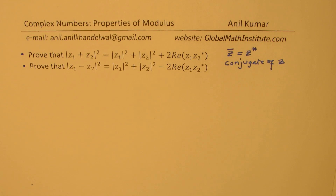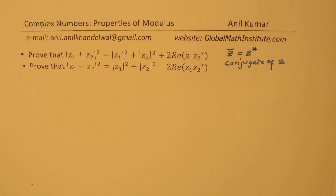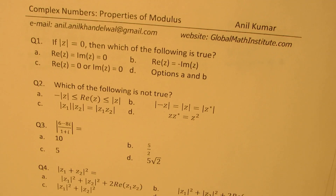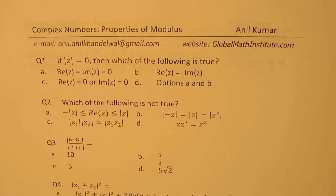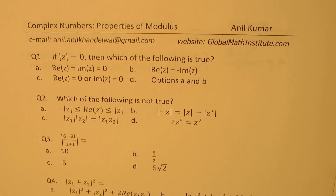A very similar property is that the modulus of z1 minus z2 whole square is equal to |z1|² plus |z2|² minus two times the real value of z1·z̄2. These two are very important questions. Once we prove this, we'll take up a practice test worksheet which includes nine questions.